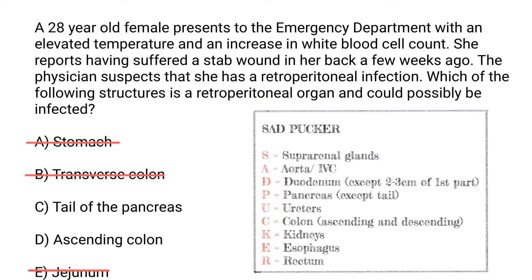It's a 50/50. Looking at the pancreas, we know the head and the body are going to be retroperitoneal. However, the tail of the pancreas is going to be intraperitoneal, therefore we can eliminate that. And the ascending colon definitely is going to be a retroperitoneal organ. We need to know all the organ structures that are going to be retroperitoneal, and the mnemonic SADPAKA will be the best guide we have for that.